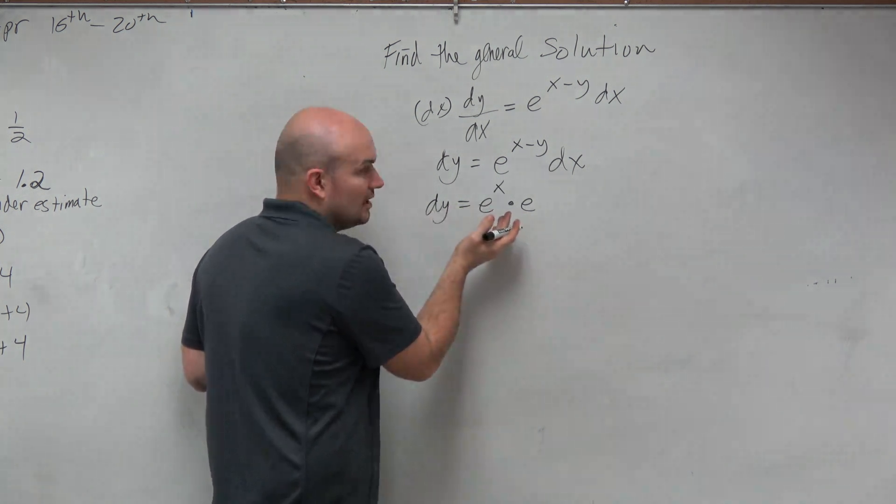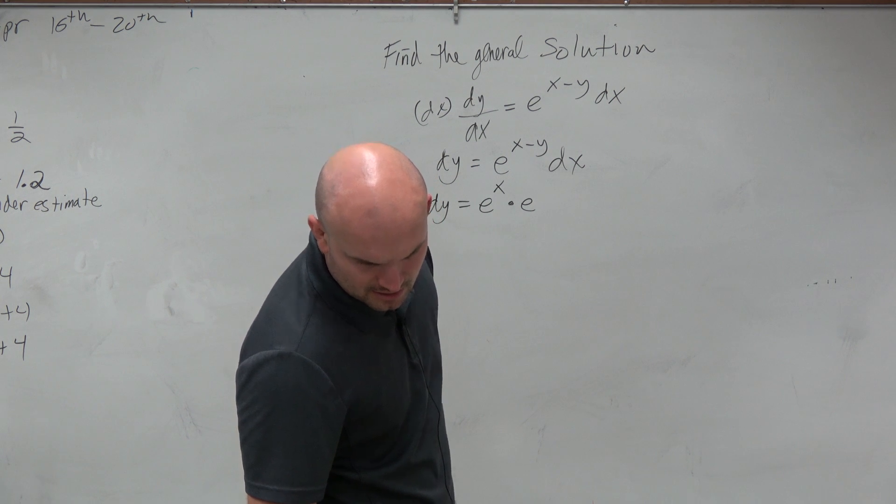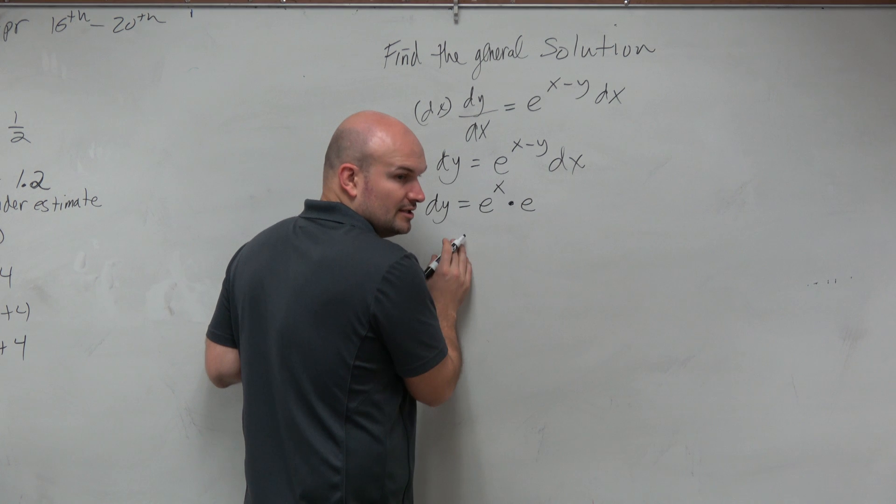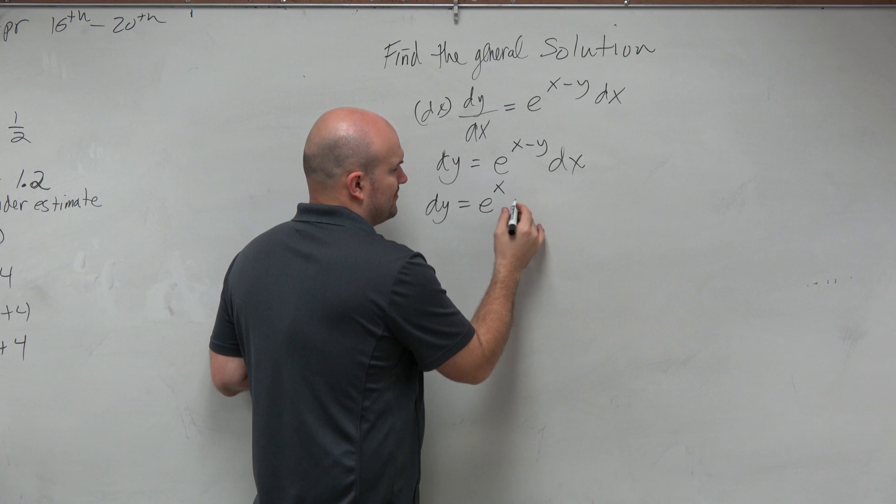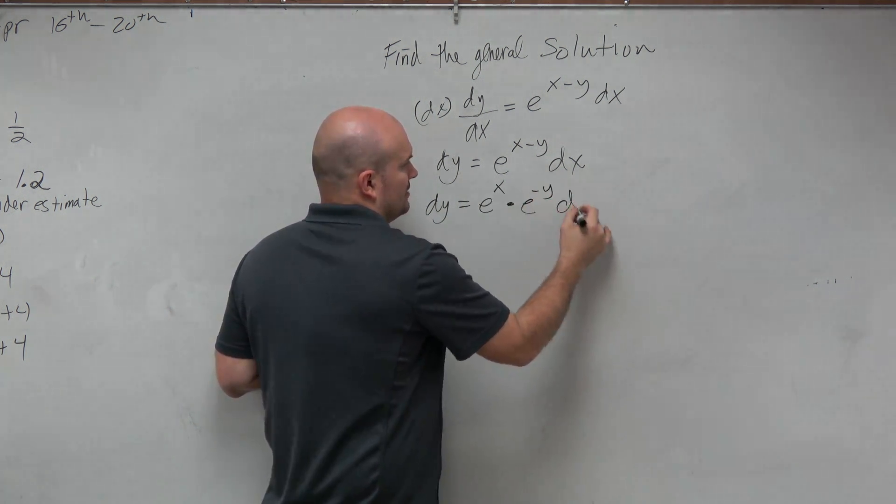Yeah, you could write it as over e to the y. You could write it as over e to the y. For you to do it times e to the negative y? Hold on. So I'm doing times e to the negative y dx.